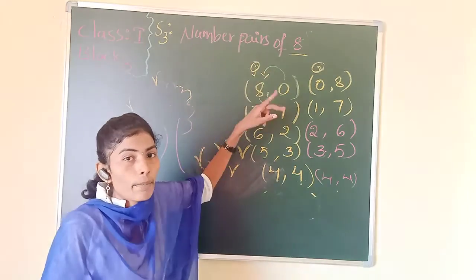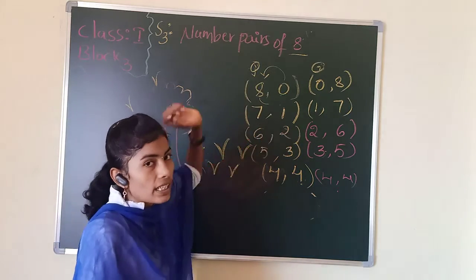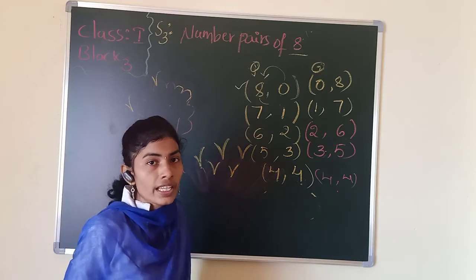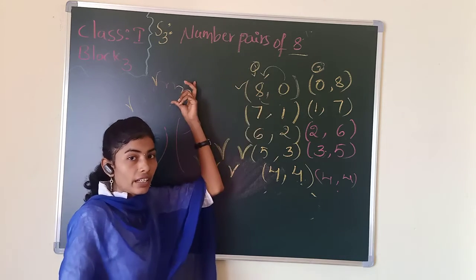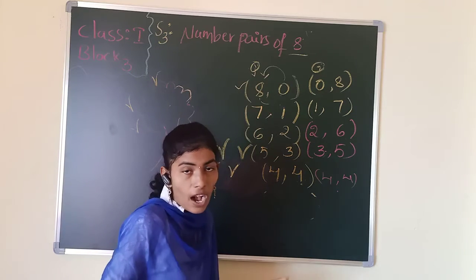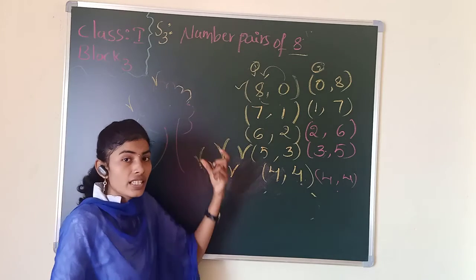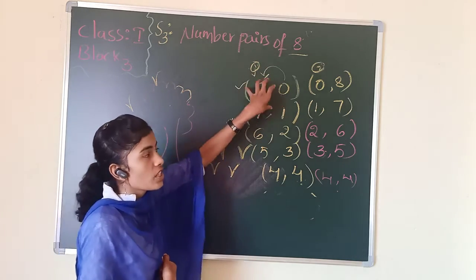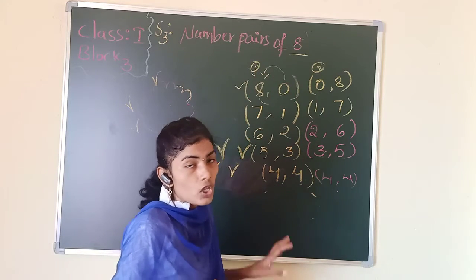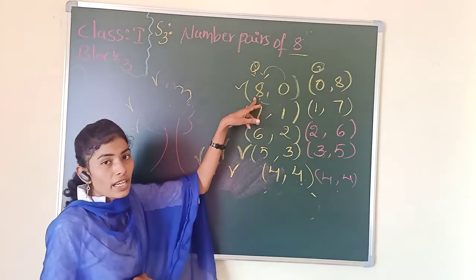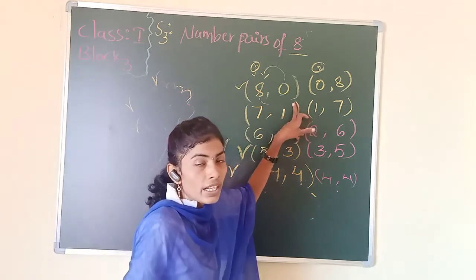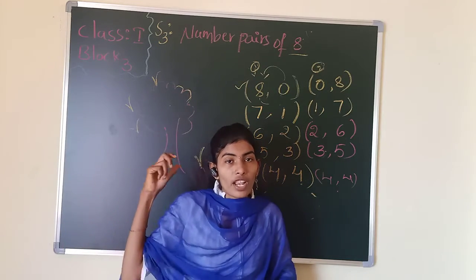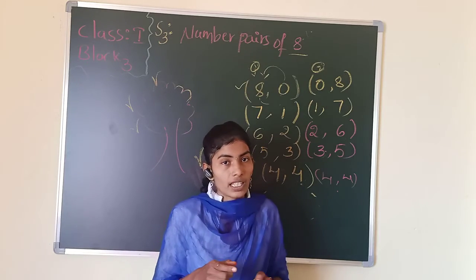Number pairs means what, children? We have to split the number into two parts. If we add those two parts, we should get the given number. For a story problem using these pairs: there are 8 monkeys playing on the tree and 0 monkeys on the grass. Or: there are 8 chocolates with me and 0 chocolates with my brother. Or: there are 8 pages in the math book and 0 pages in the English book. Like that we can frame any word problem.